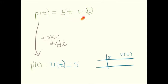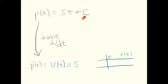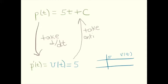5t plus 1, 5t plus π, 5t plus e, 5t plus square root of 2 — these are all possible position functions that have derivative 5. The way we represent this is by saying plus C. Plus C means that there's an infinite number of answers; every different C value gives a different answer, and they're all correct. We started with the velocity function and ended with the position function. This process of going backwards with the derivative is called taking an antiderivative.